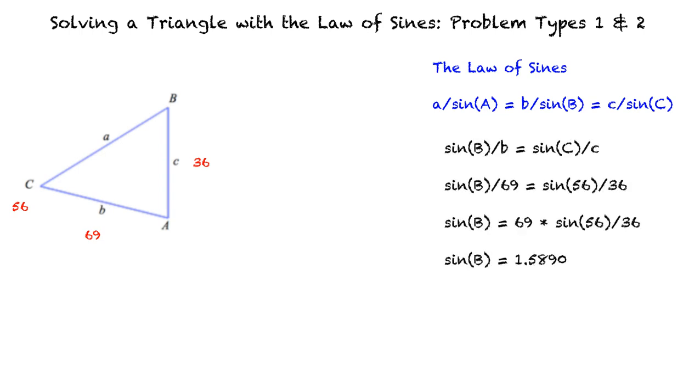We get that the sine of angle B equals 1.5890 approximately, and since the sine of an angle is always less than or equal to 1, there is no solution for B.